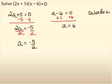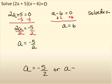So, you can check your answers quickly by substituting 6 in for a, and see if you get zero, and substituting negative 5 over 2 in for a, and see if you get zero. So, these are our two answers here. That will give us zero when we substitute them into those quantities.